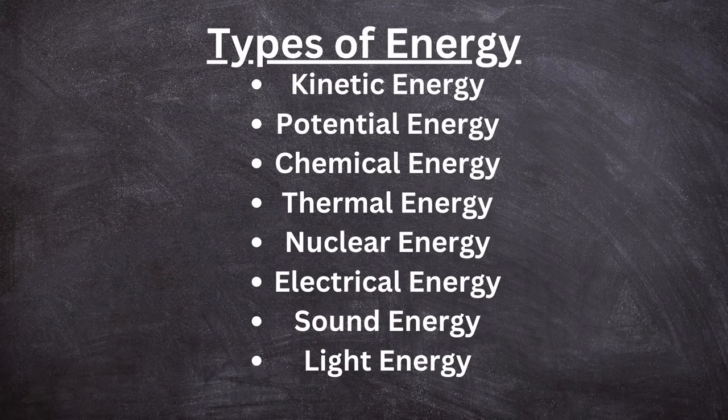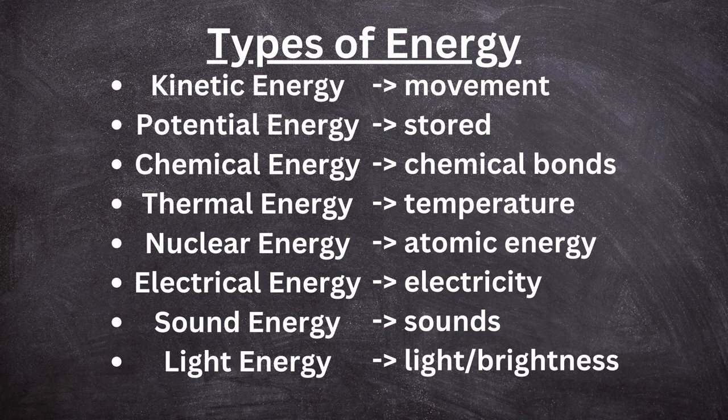Energy comes in many forms. Kinetic energy is the energy produced when an object moves. Potential energy is the energy an object could do — and there are many types of potential energy. There's also chemical energy, such as when a chemical is used to power something, and thermal energy, which is the energy produced by heat.